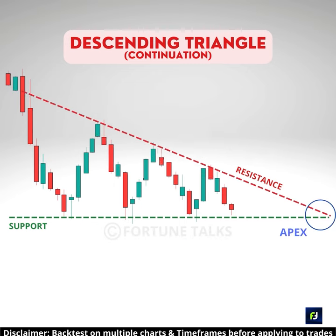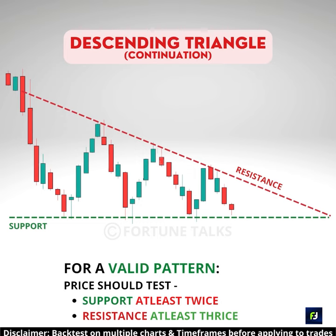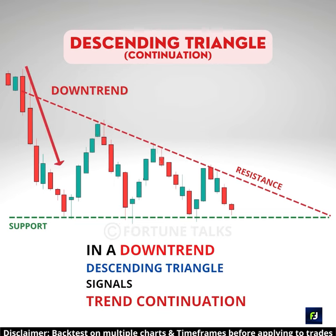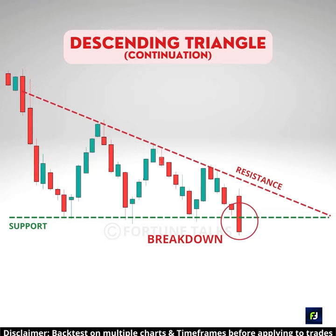The descending trend line and the support line meet at a point called the apex. The pattern is valid only if the price tests the support level at least twice and the resistance level at least thrice. If the market is in a downtrend when the descending triangle pattern appears, this signals a bearish continuation. When the price breaks below the support, it indicates that the downside momentum will probably continue.